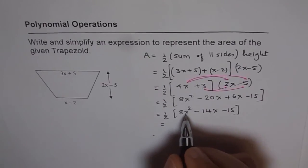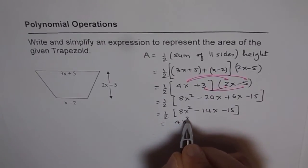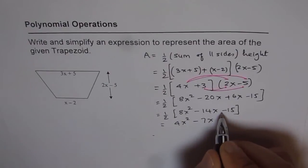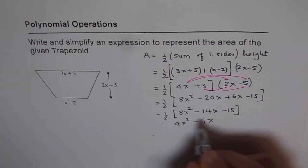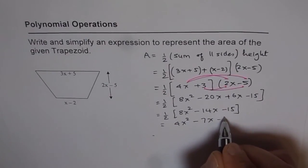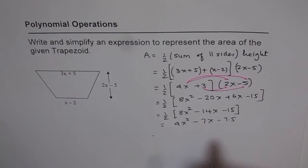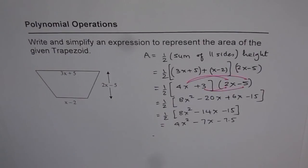So, we can multiply by half and get 4x squared minus 7x, and here this is 15 by 2, we can write this as 7.5. So, that becomes the area in simplified form for the given trapezoid. Thank you.